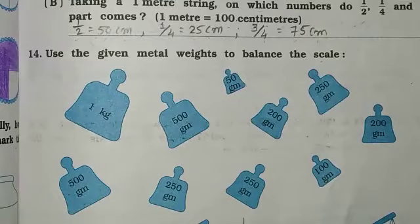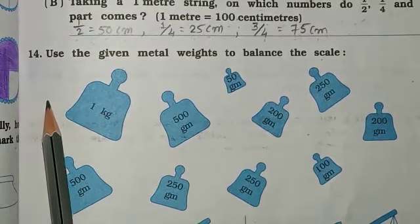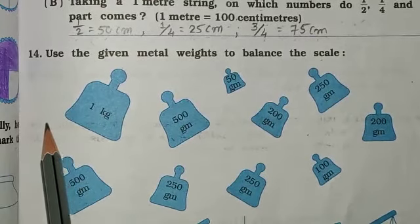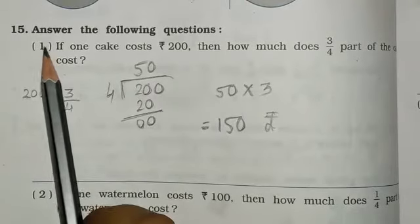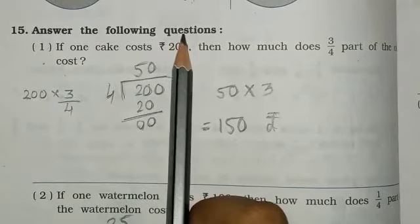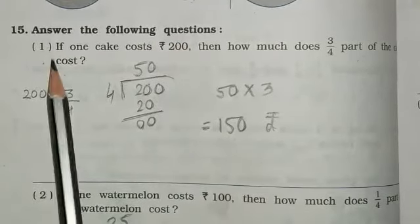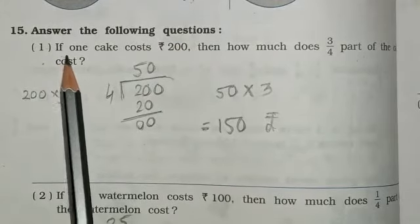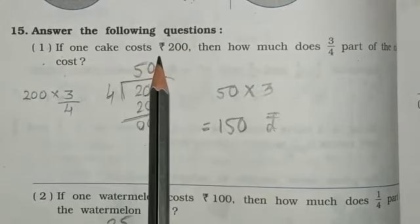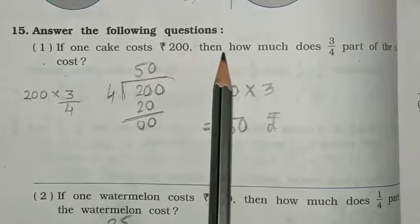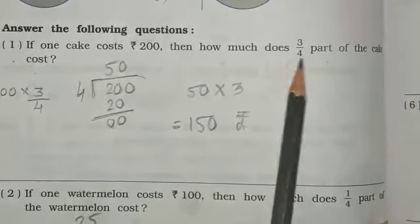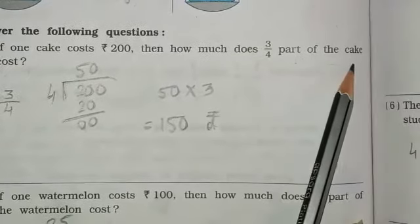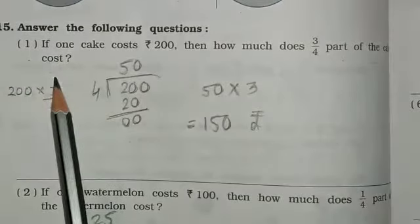Hello students, good morning. Last hour question number 14 was completed. Today we start question number 15. Answer the following questions. First question is: if one cake costs Rs.200, then how much does 3 upon 4 part of the cake cost?